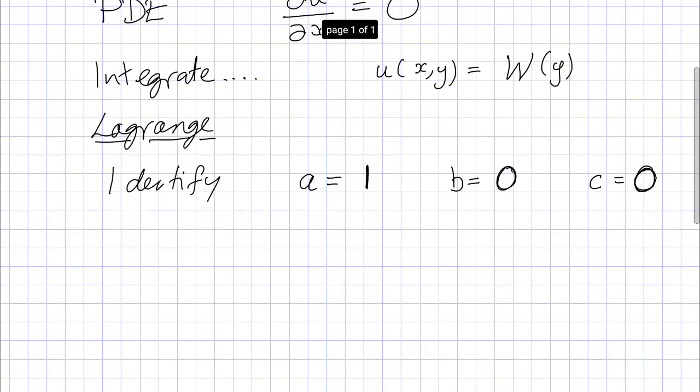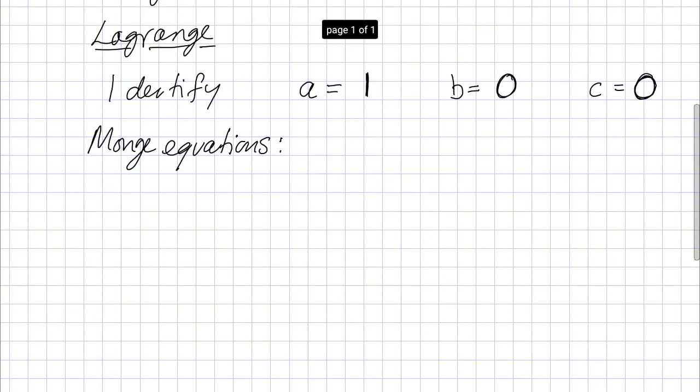Okay so very simple. And once we've identified those coefficients we can write down the Monge equations straight away and we only need two of these.